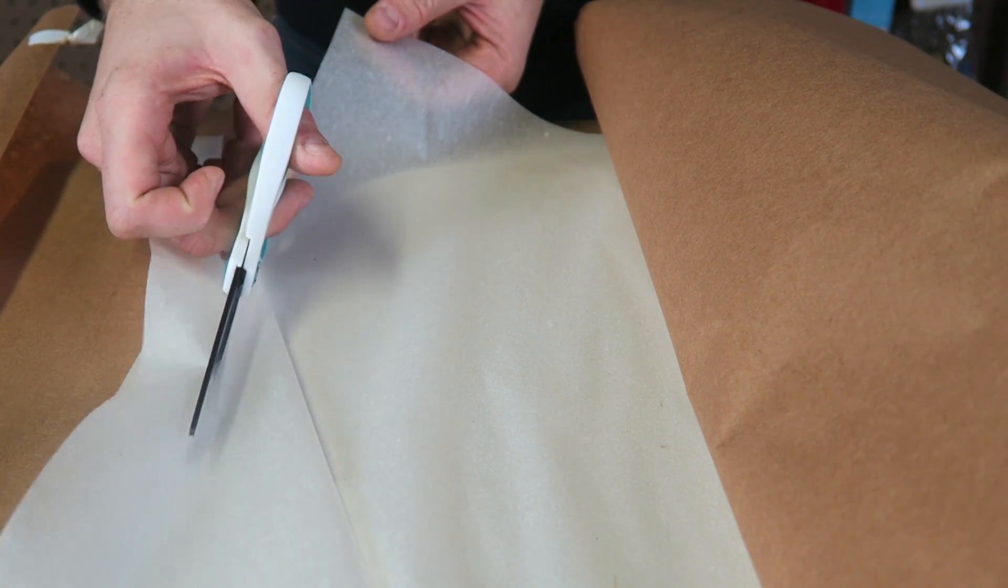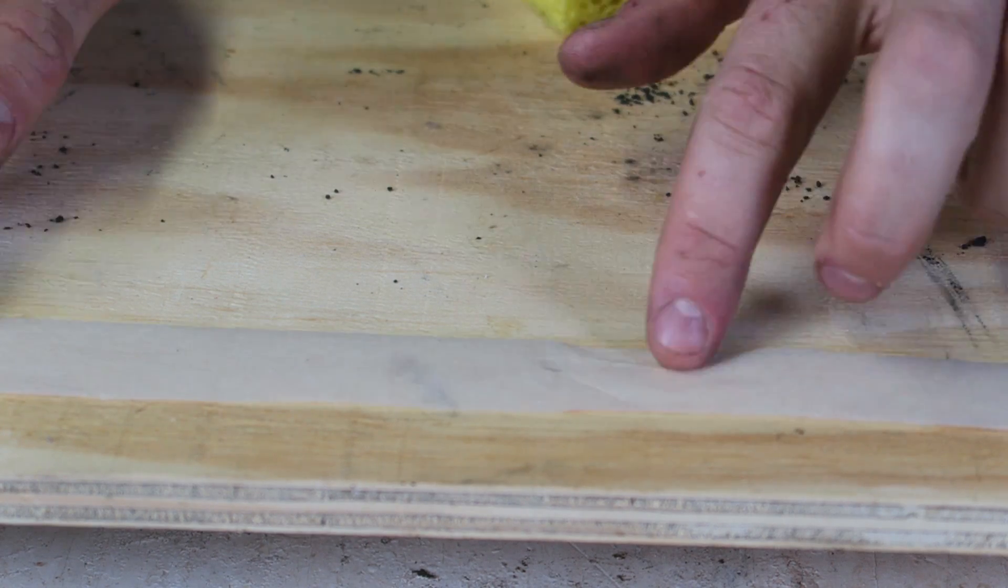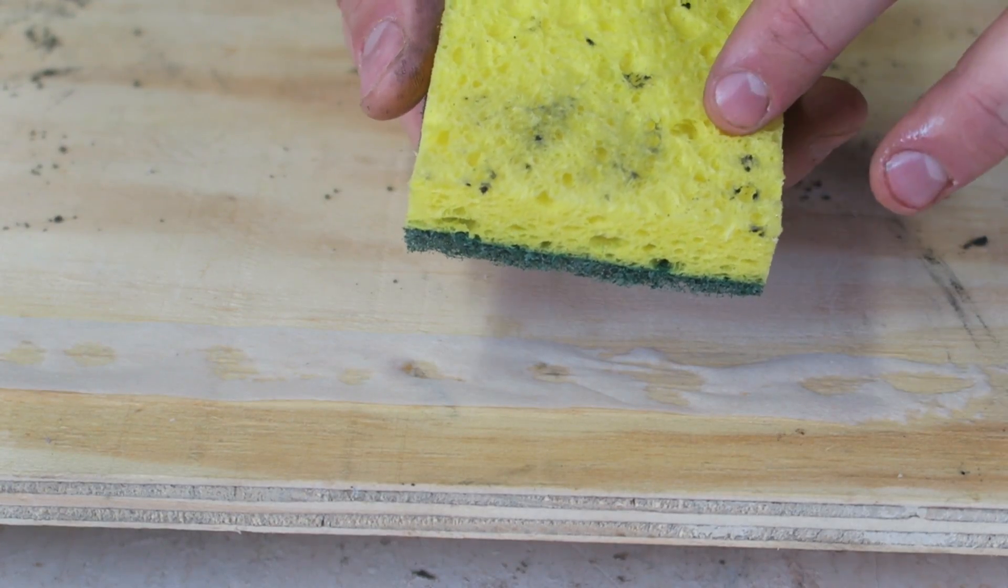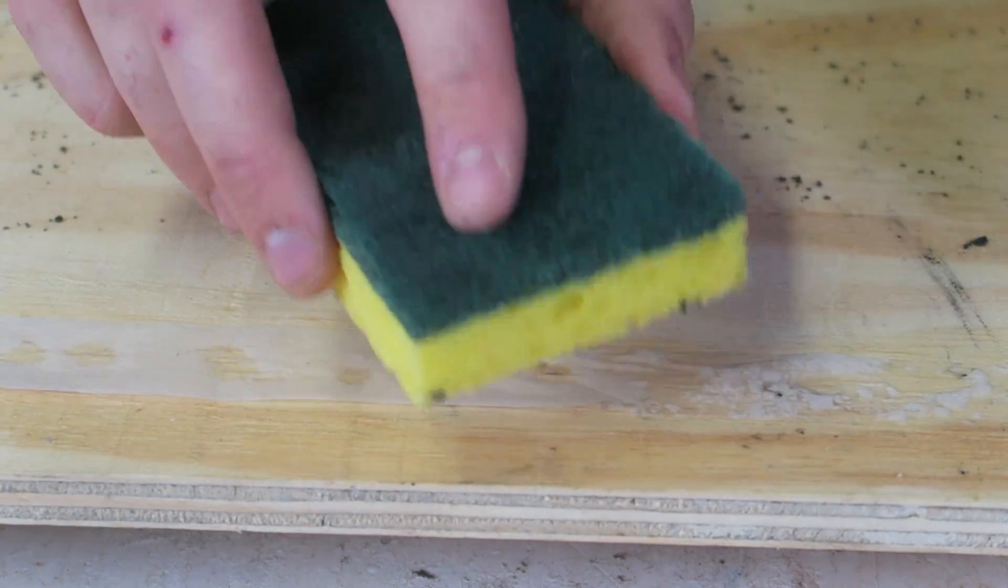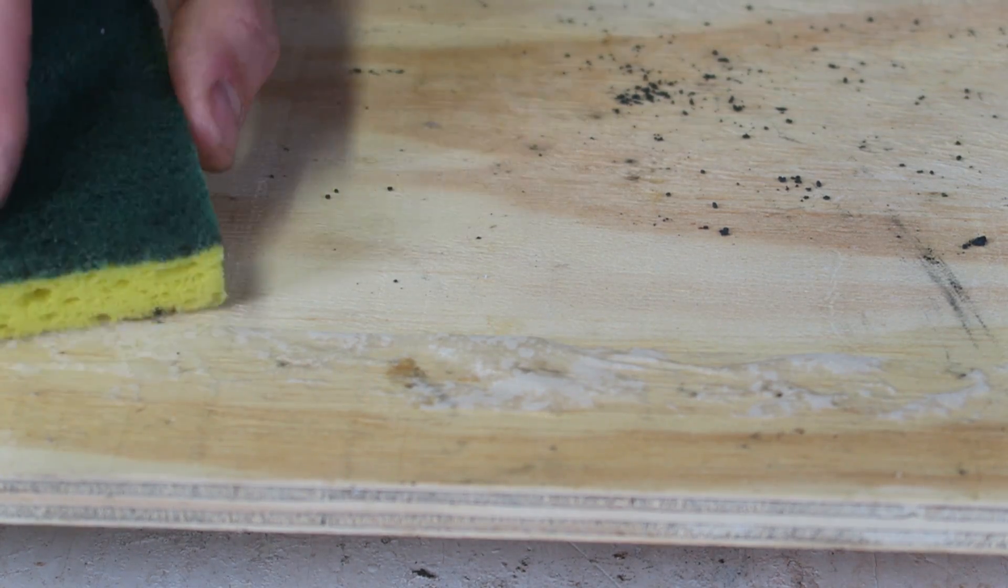Then I'm going to moisten a sponge and just going to moisten the table just like this. Then lay this tape of tissue paper down here, Japanese tissue paper. And then again, I'm going to grab this sponge and just going to moisten this paper. Boom, just like that.